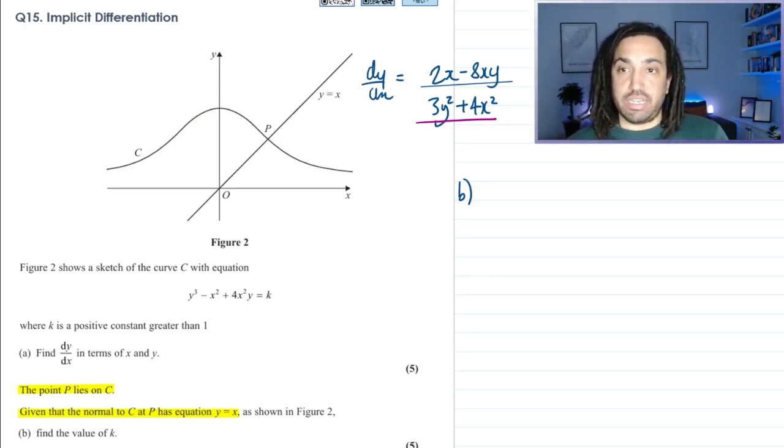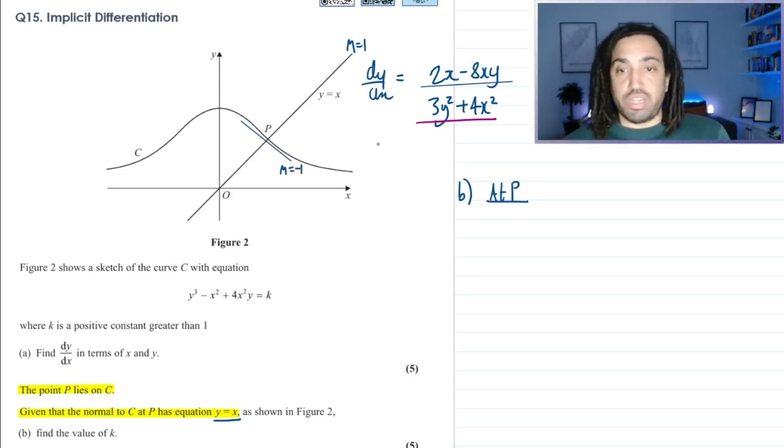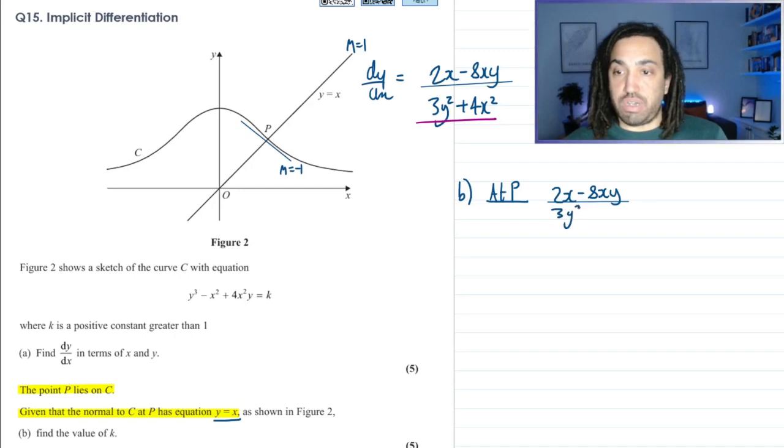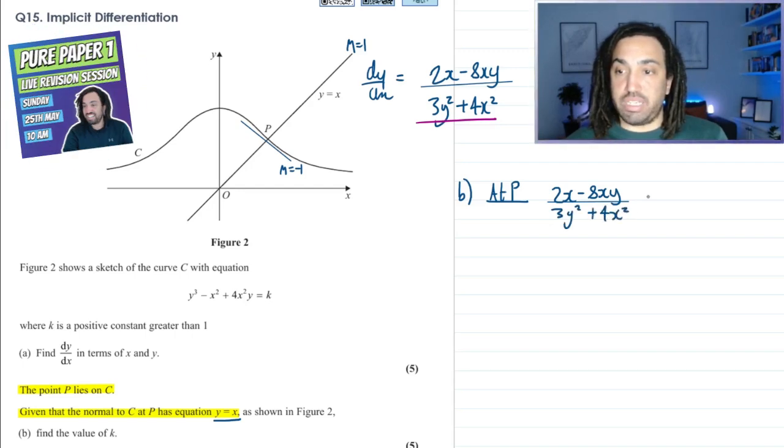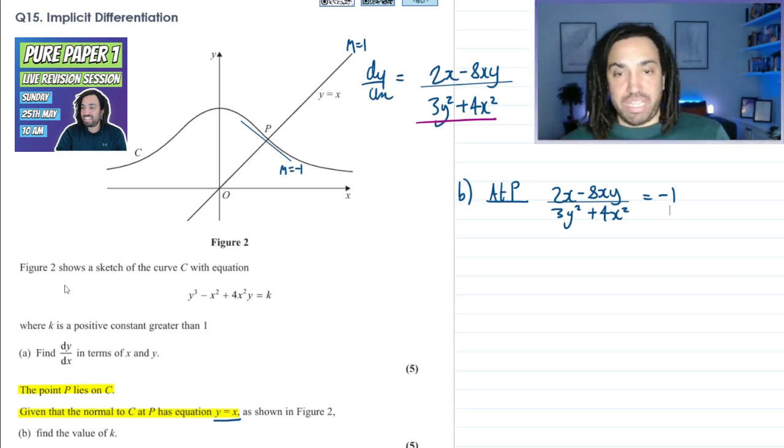So let's look then at the only relevant part of the graph, which is at p. So what do we know about the gradient of p? Because we do have dy/dx, so what do we know about the gradient? Well, if the normal is y equals x, then it means the normal gradient is equal to 1, which means the tangential gradient is equal to the negative reciprocal of that, which is minus 1. So therefore the dy/dx at p should equal minus 1.